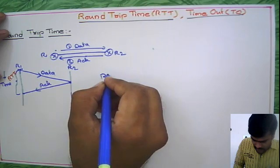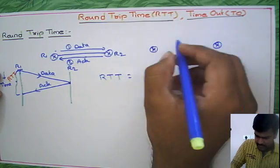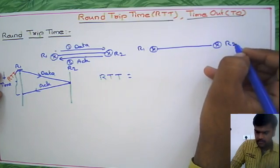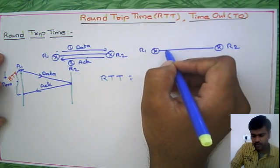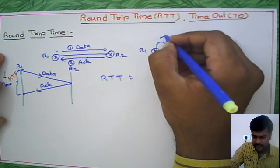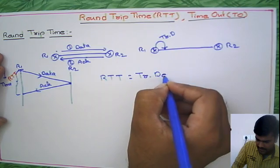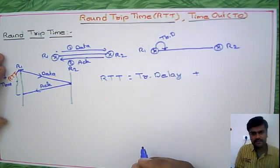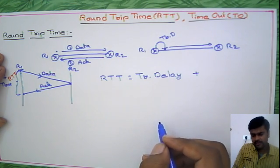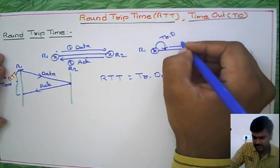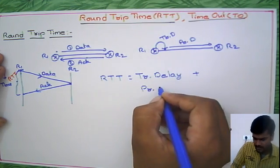Now let us look at the formula for round trip time. Consider R1 and R2 — whenever a packet is ready, it needs to be transmitted from the router to the outgoing link, so we have transmission delay. Then from R1 to R2 the packet must travel, which gives us propagation delay. Both of these must be considered in round trip time.